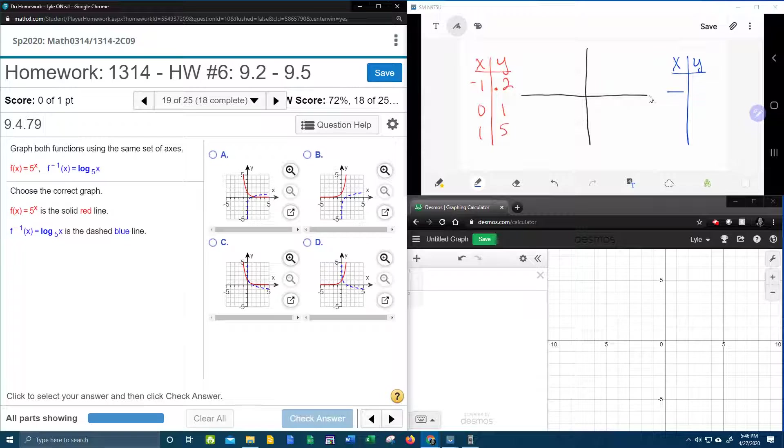So that means that our first ordered pair for the log function will be 0.2, negative 1. The second ordered pair would be 1, 0, and then 5 and 1.